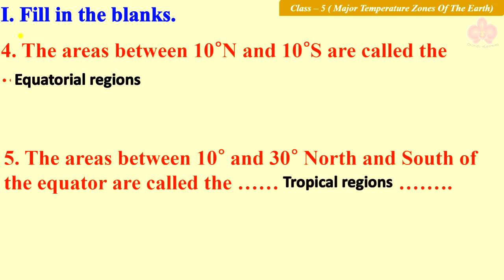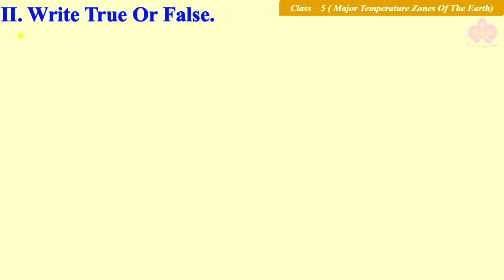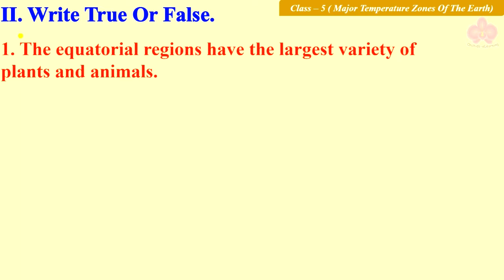The answer to number five is tropical regions. Next question: Write true or false for the following statements. First statement: The equatorial regions have the largest variety of plants and animals. Think about your answer — you can write your answers in the comment section or take a notebook for better practice. The answer is true.